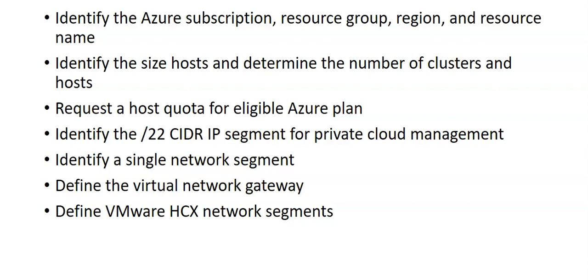When determining the number of clusters and hosts, deploying the Azure VMware Solution creates a private cloud containing a single cluster. I will need to define the number of hosts to deploy in the first cluster. For each private cloud created, there is one vSAN cluster by default — always make note of this. You can add, delete, and scale clusters. The minimum number of hosts per cluster for the initial deployment is three.